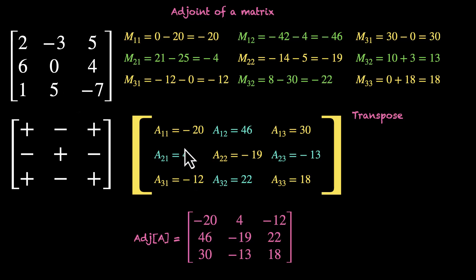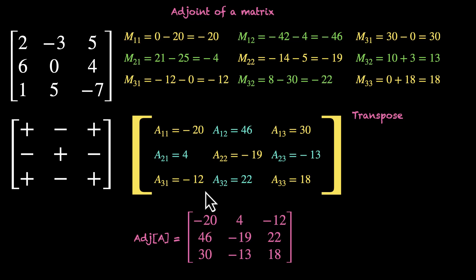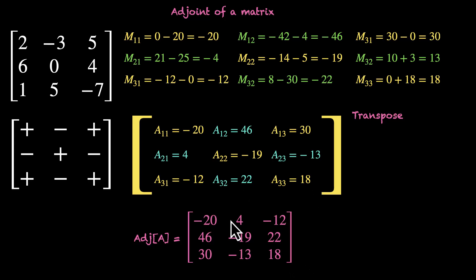Let's see how we take the transpose. We have minus 20, 46, and 30 — so the first row becomes the first column: minus 20, 46, 30. Then 4, minus 19, minus 13 becomes the second column. And minus 12, 22, 18 becomes the third column. So this is the adjoint of the matrix that we began with.